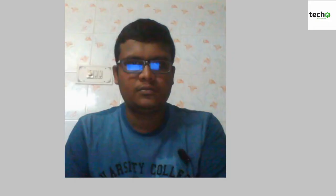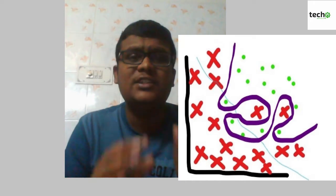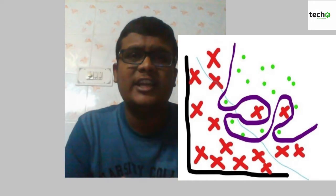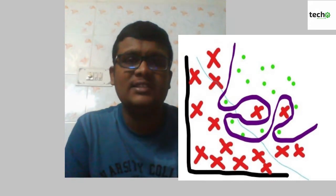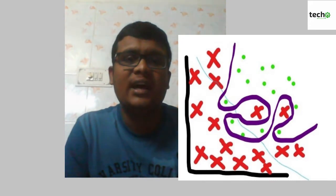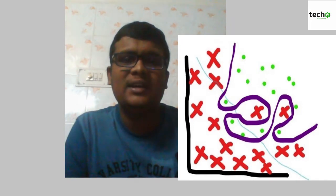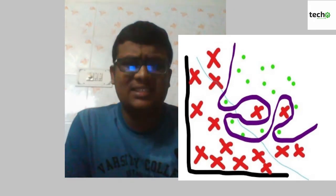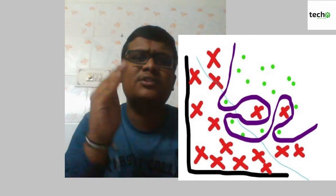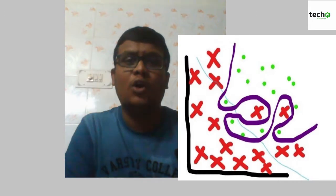Now, what is overfitting? Consider the same nonlinear dataset. This is the same dataset used to explain underfitting, but now we use it to explain overfitting. You can see the bifurcation line shown in purple — it is very complex in nature, with too many curves in order to fit all the data points.